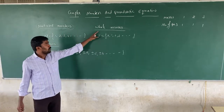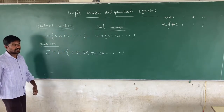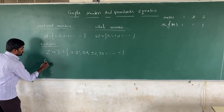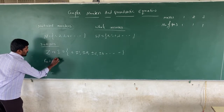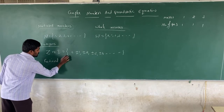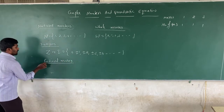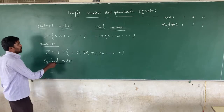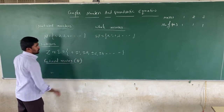This is about integers. So we have natural numbers, whole numbers, and integers. Next, let me talk about Rational Numbers. What is the representation of rational numbers? Q.